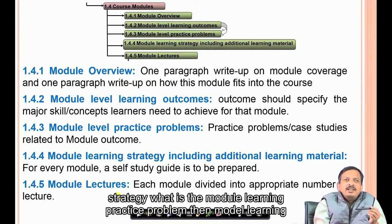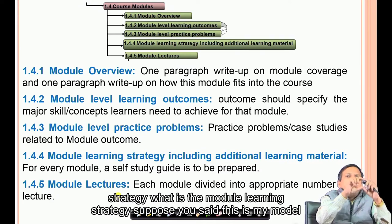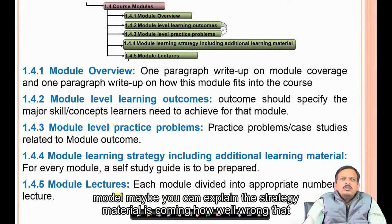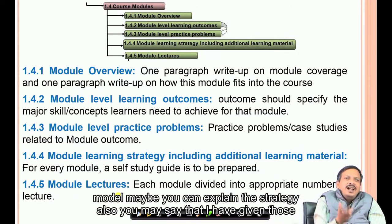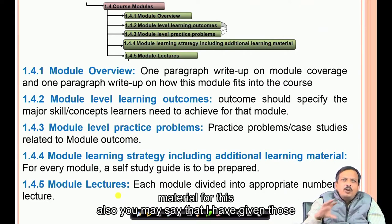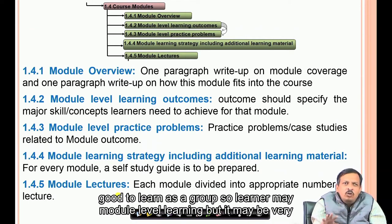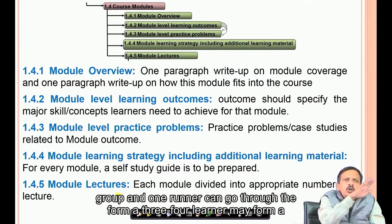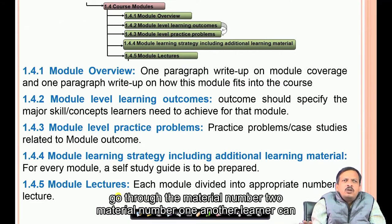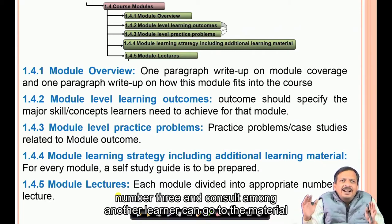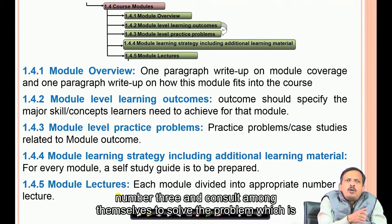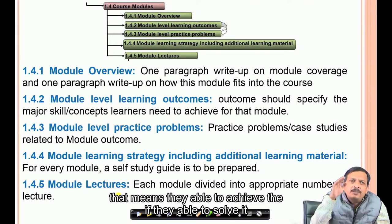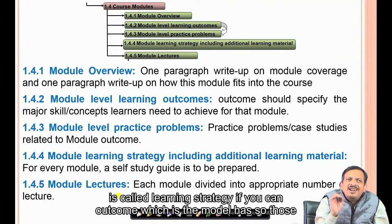The module learning strategy explains how a learner should learn the module. For example, you may suggest that it is very good to learn as a group. Learners may form a group of 3 or 4, where one learner goes through material 1, another through material 2, another through material 3, and they consult among themselves to solve the module level practice problems. If they can solve it, they have achieved the module outcome.